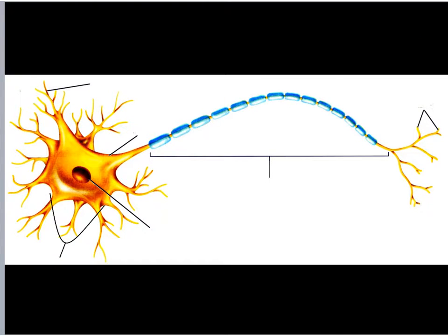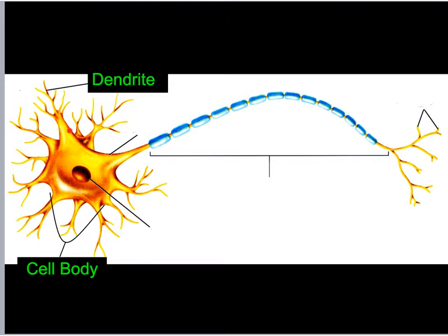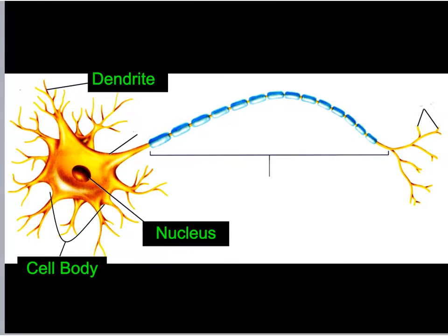You have a picture of a neuron on your study guide and we're going to label it. These things coming out of the main part of the neuron — which is called the cell body — are the dendrites. So we have these dendrites that are branches coming off of the cell body. Inside the cell body, the large circular structure — obviously that's the nucleus.